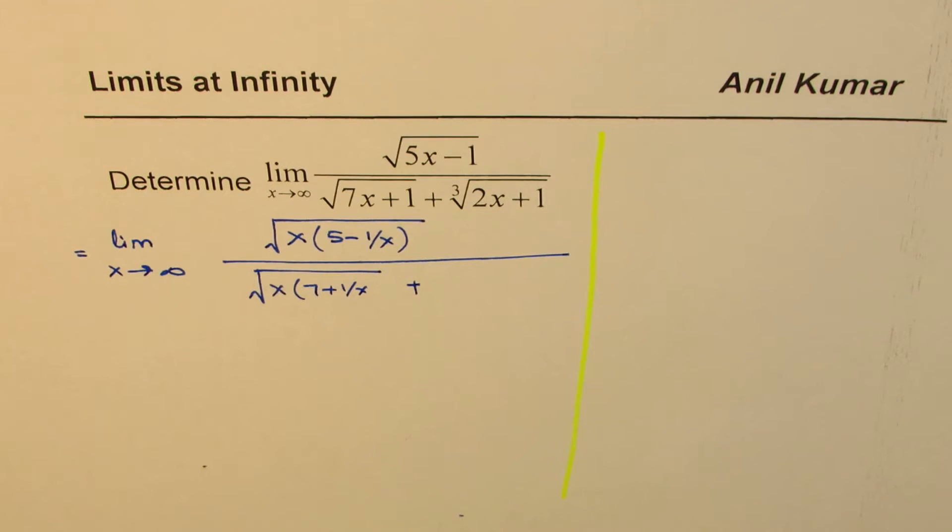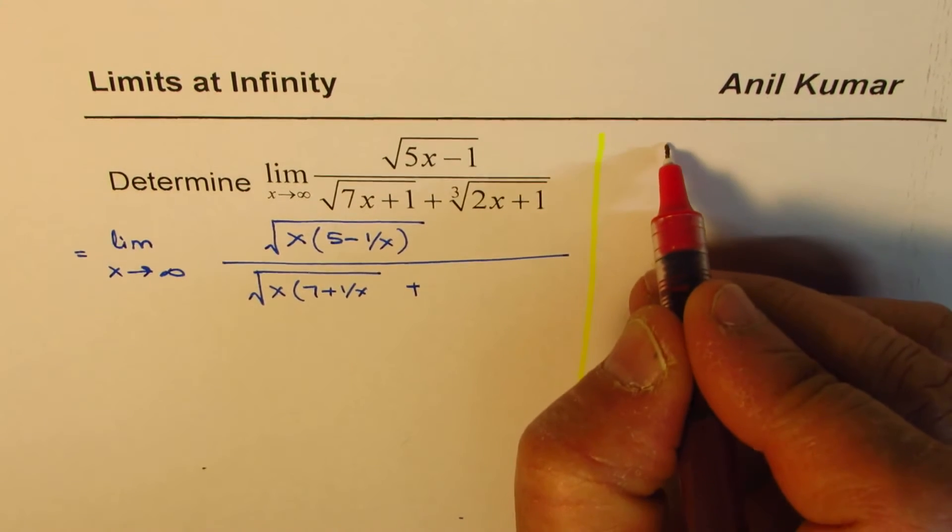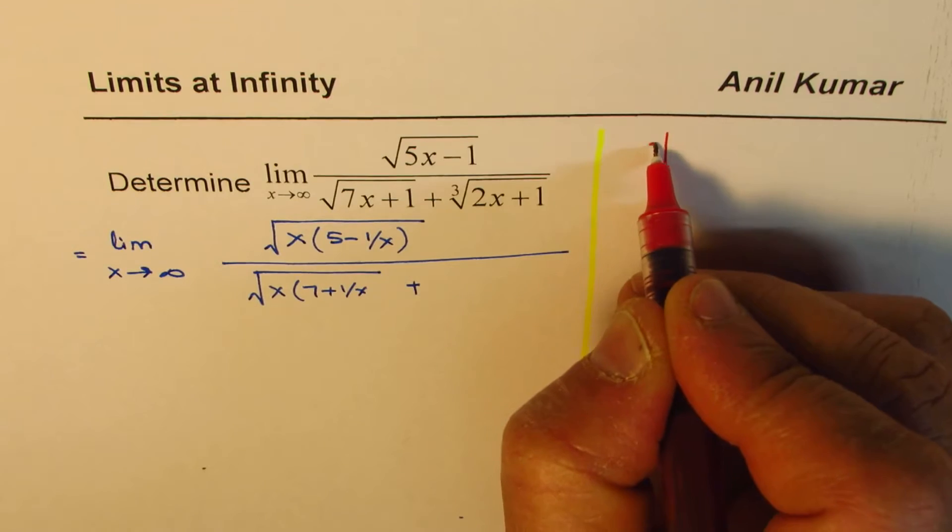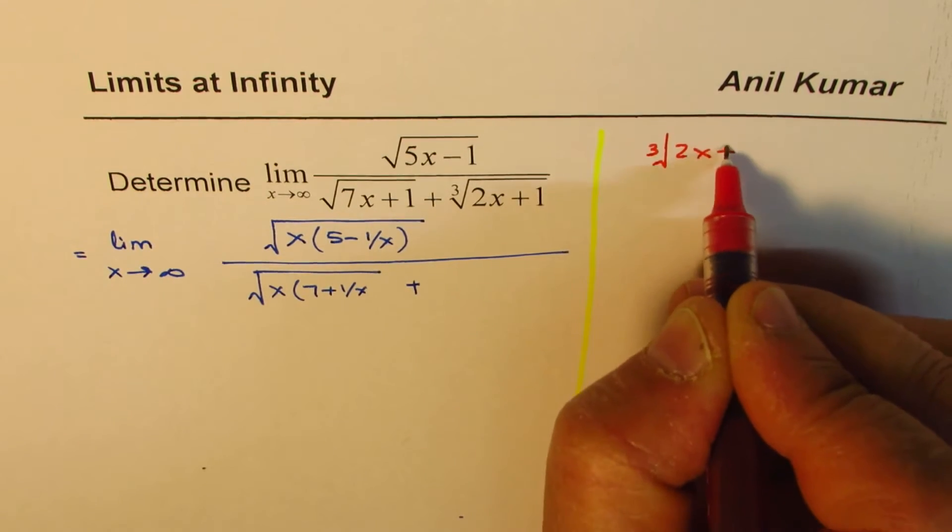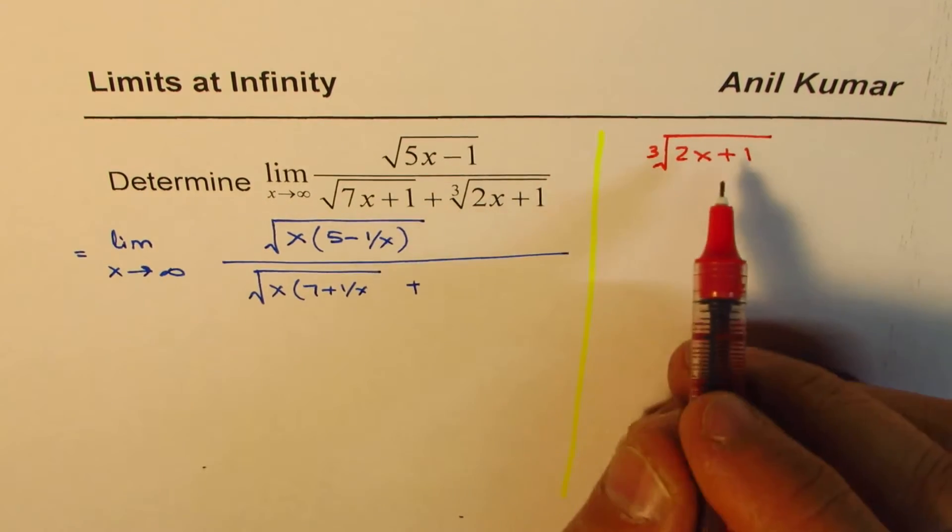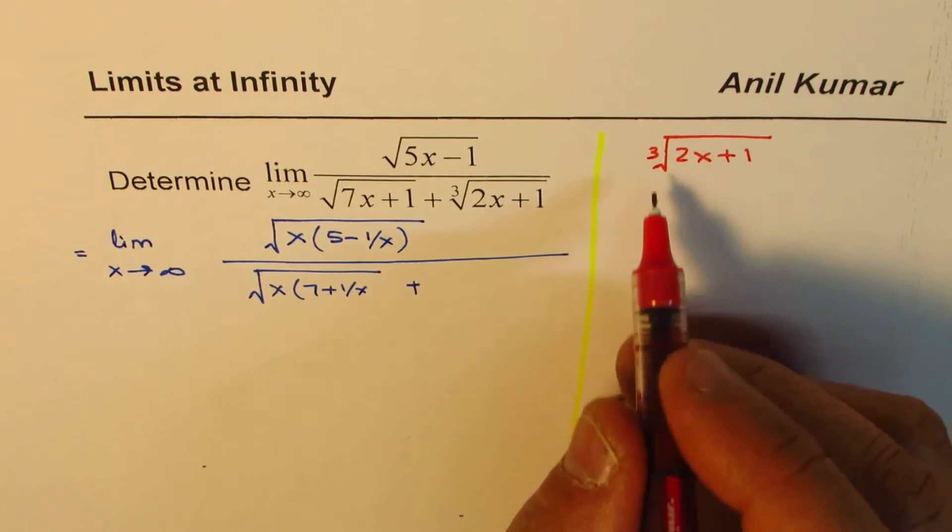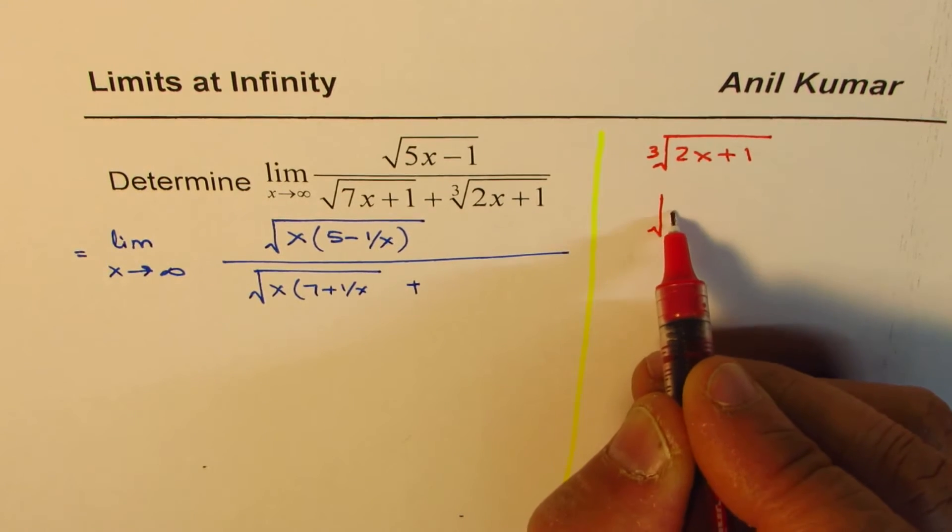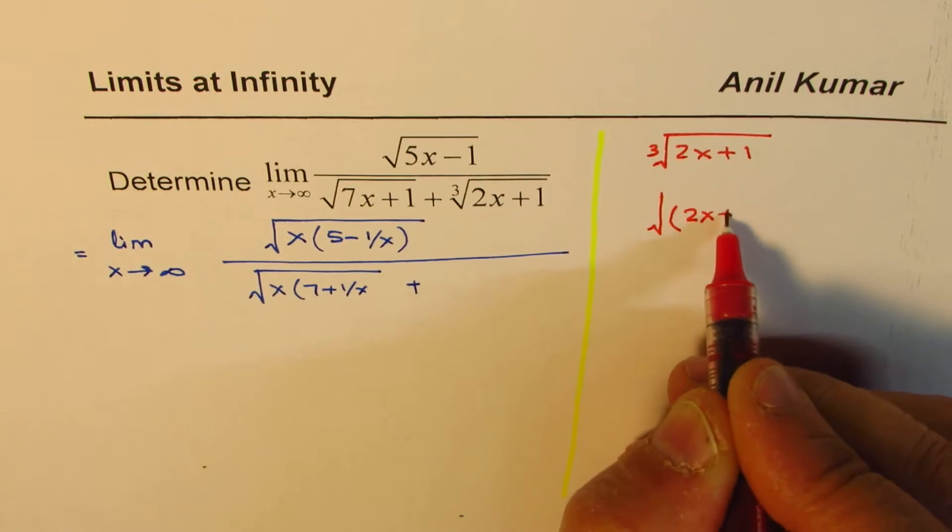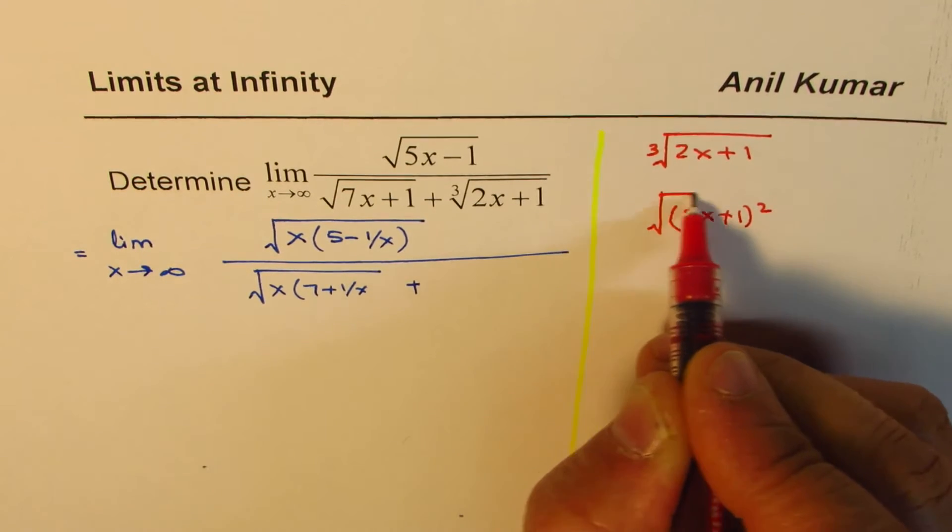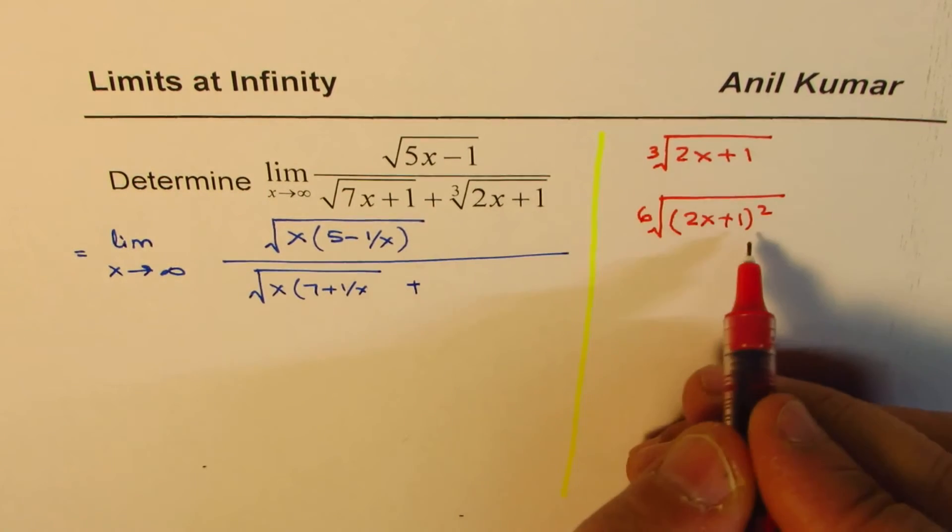So let us actually solve this separately. So what we have here is a radical part cube root of 2x plus 1. Now, if I do the sixth root of it, I could actually write this as, let's say, this 2x plus 1 square and then sixth root. So that is the same, right?